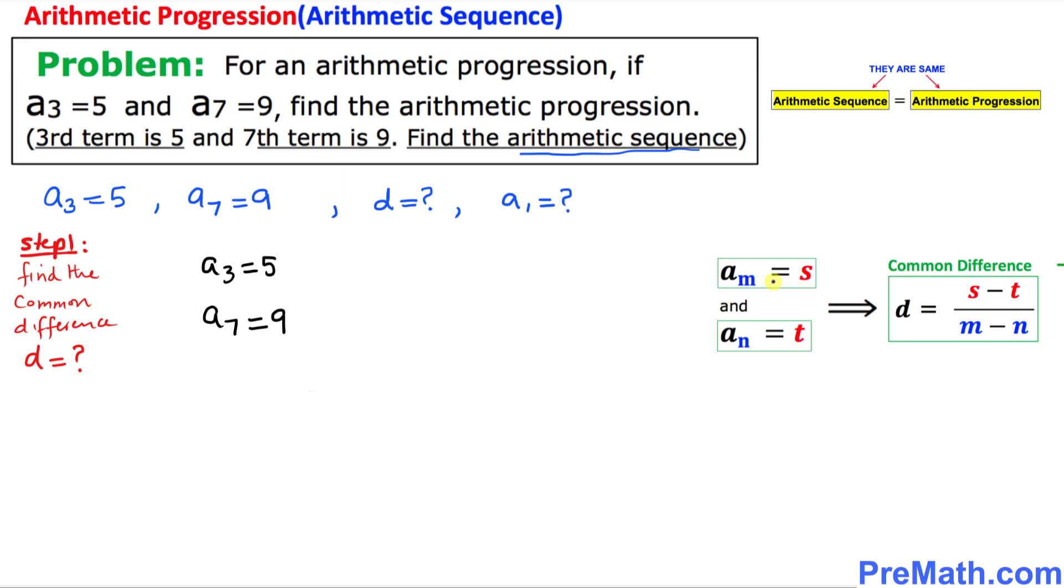It simply states if aₘ = s and aₙ = t, then the common difference d is the ratio of their differences.